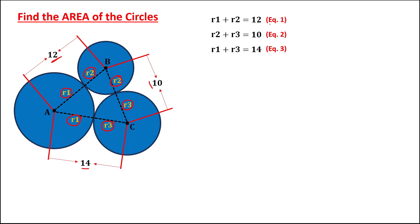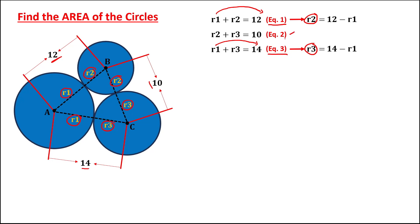From equation number 1, to solve for R2, we transpose R1 to the other side. So R3 equals 14 minus R1. Then we need to substitute R2 and R3 into equation number 2. So equation number 2 becomes: R2, which is 12 minus R1, plus R3, which is 14 minus R1, equals 10. And to solve for R1,